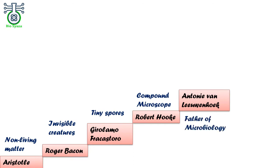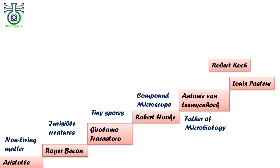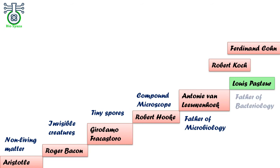In 1676, Antoni van Leeuwenhoek observed bacteria using his own design microscope and is famously known as the father of microbiology. In 1861, Louis Pasteur rejected Aristotle's concept of spontaneous generation and supported germ theory. Robert Koch gave the germ theory of diseases, and Ferdinand Cohn invented a new system for classifying bacteria. These three were also the founders of modern microbiology. Pasteur was famous for his discoveries of the principle of vaccination, microbial fermentation, and pasteurization, and is known as the father of bacteriology and the father of modern microbiology.